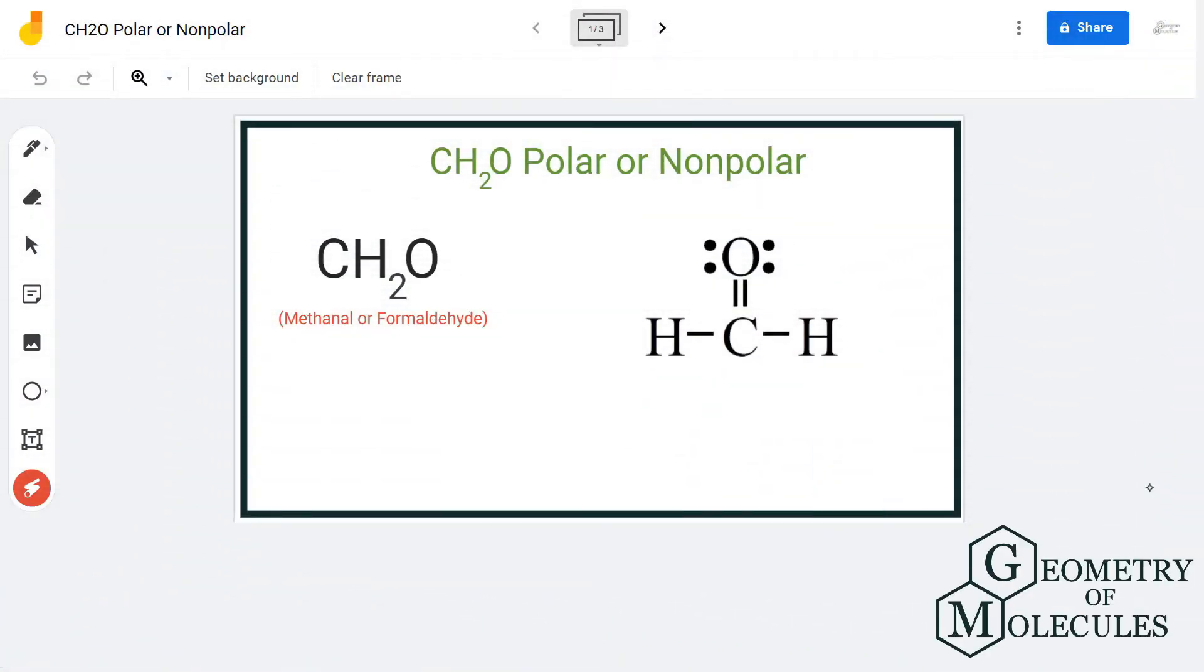Hi guys, today in this video we are going to determine the polarity for CH2O molecule. It's the chemical formula for formaldehyde and it is made up of one carbon atom, two hydrogen atoms, and one oxygen atom.